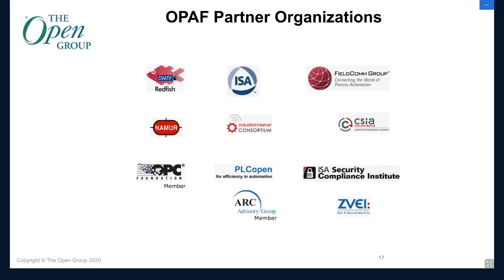There's an old African proverb: if you want to go fast, go alone; if you want to go far, go together. In OPAS, we want to go far, and that means we need partners. OPAS works with a broad range of partner organizations in the development of the OPAS standard. This can manifest through agreements to leverage existing external standards, or through work with organizations whose goals and directions align with OPAS.